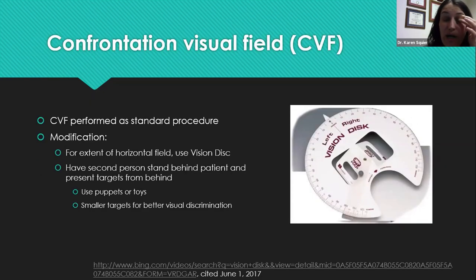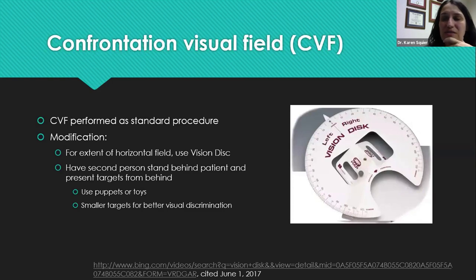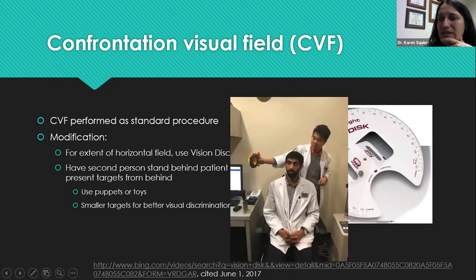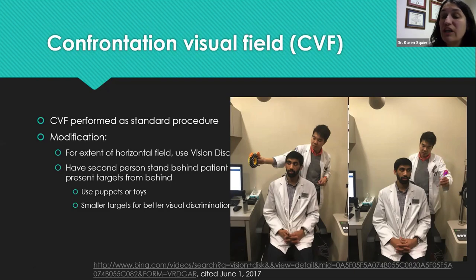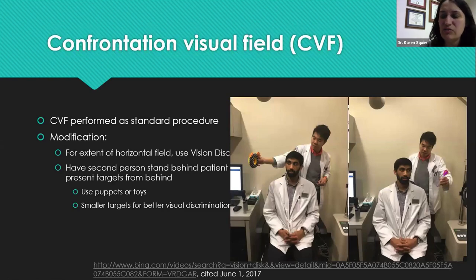For side vision assessment, many children don't do well with standardized visual field testing, so use alternatives like confrontation fields — using fingers or asking for a 'high five' in different fields of gaze. The vision disc gives a gross measurement of degrees off to the side. Another approach is having a colleague stand behind the child and bring objects in from the side; for cortical vision impairment, use objects with a rattle for combined auditory and visual stimulation to elicit gaze into different fields.